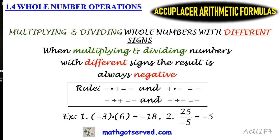Good day students, welcome to mathgotserved.com. In this clip we're going over formula 1.4 of the must-know Accuplacer arithmetic formulas. This is under the category whole number operations. The title of this formula is multiplying and dividing whole numbers with different signs.